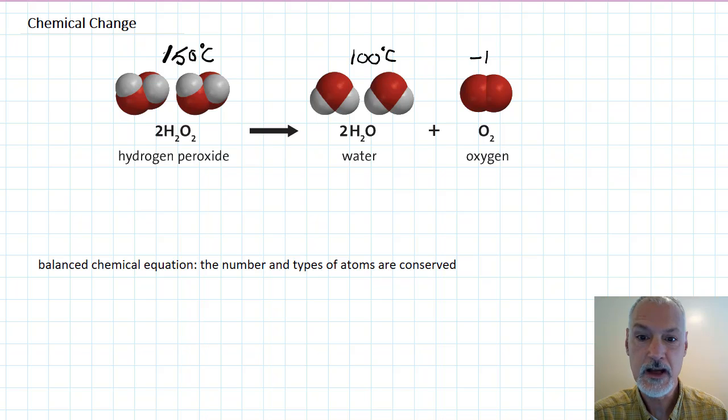And oxygen at minus 183 degrees Celsius. So as a result, we can see we've created new substances from this particular change. We can also see that the atoms are being rearranged. Oxygen and hydrogen are paired differently in this particular situation.